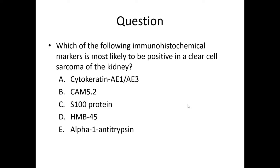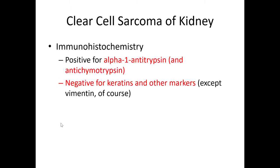Question: which of the following immunohistochemical markers is most likely to be positive in a clear cell sarcoma of the kidney? It shouldn't be keratin because it's not a carcinoma. It shouldn't be melanocytic markers. So you can conclude it's alpha-1 antitrypsin. The tumors are positive for alpha-1 antitrypsin and also antichymotrypsin, and negative for keratins and other markers. That's the end of the video for case 9. Thank you.